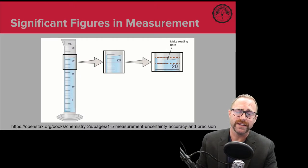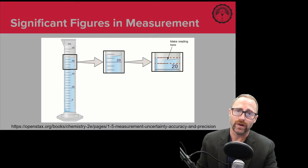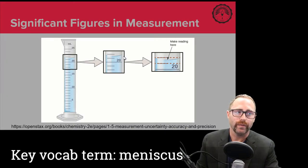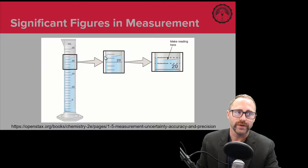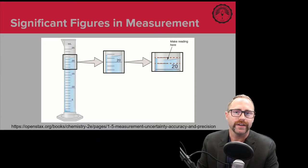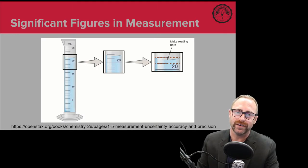This piece of glassware is called a graduated cylinder, and it's got markings on it. Those markings help us determine the volume of the liquid in the graduated cylinder. There's a section that gets magnified, and you can tell that the meniscus — this slightly curved part of the fluid pointing down because it's water in a glass cylinder — is where you are responsible in chemistry to determine exactly what that volume will be. That's where significant figures come into play.